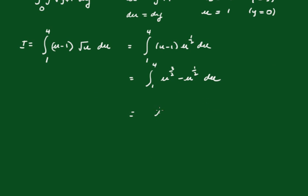Now we can integrate. Adding one to the power becomes u to the 5 over 2, over 5 over 2, minus u to the 3 over 2 over 3 over 2, between 4 and 1.